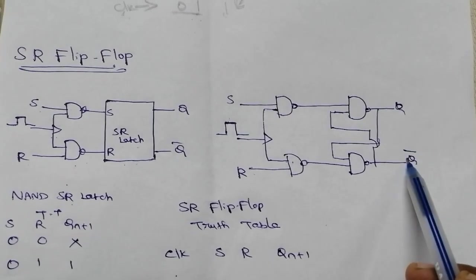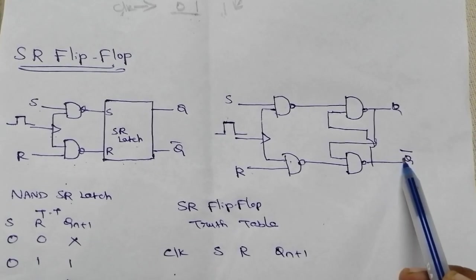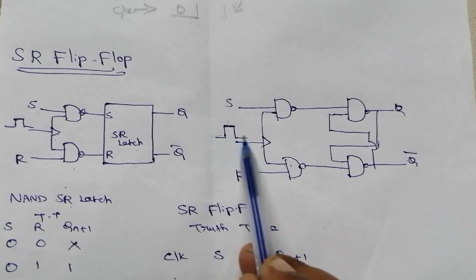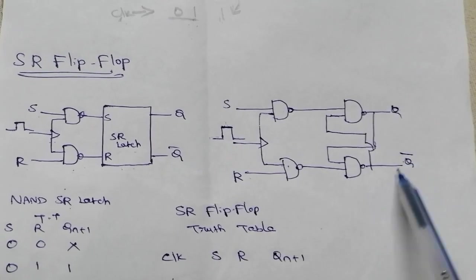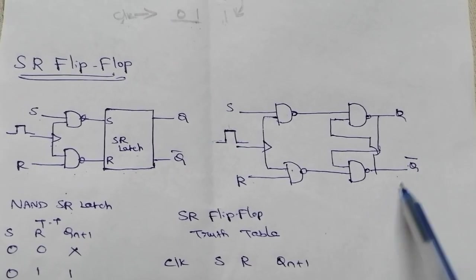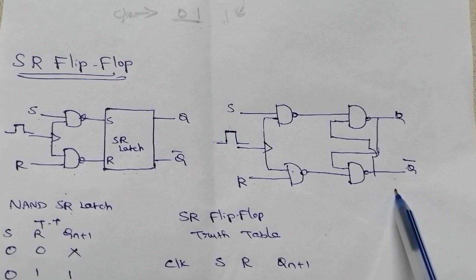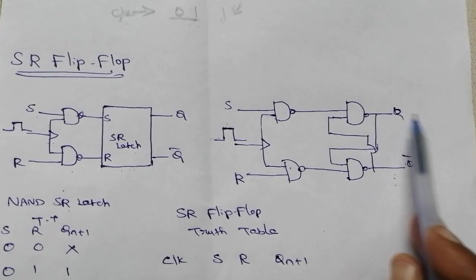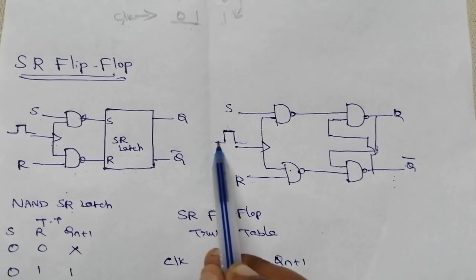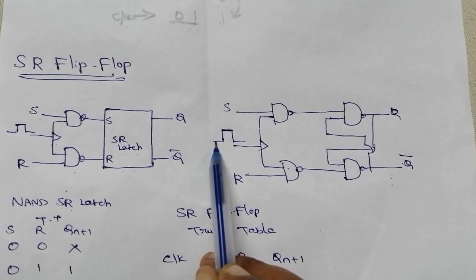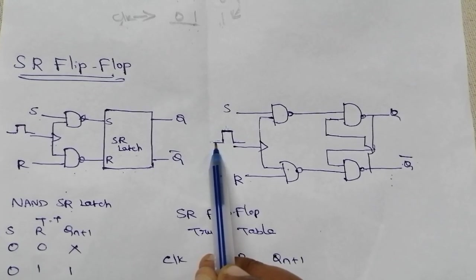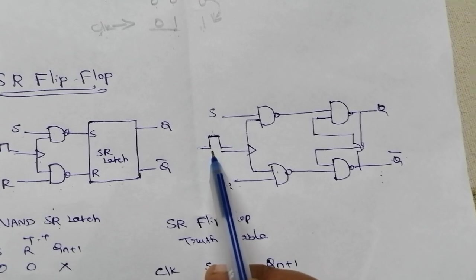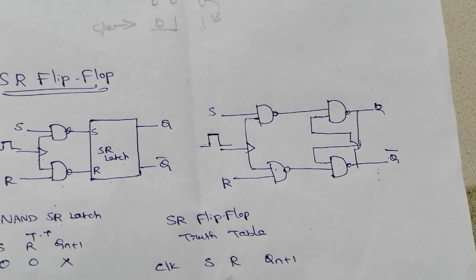When the clock level is zero, there is no change at the output — the output will be the same as the previous state. There is no change at the output when the clock is at zero level triggering. This is the concept of level triggering.